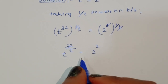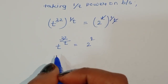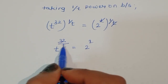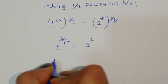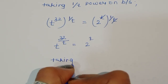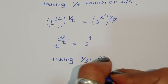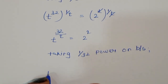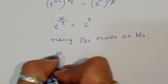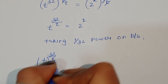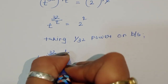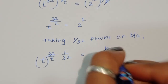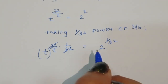Now we have to take power 1 upon 32 on both sides, because we have to cancel this 32. So taking 1 upon 32 power on both sides: t power 32 upon t, raised to 1 upon 32, is equal to 2 power 1 upon 32. Now this 32 is cancelled from this 32.